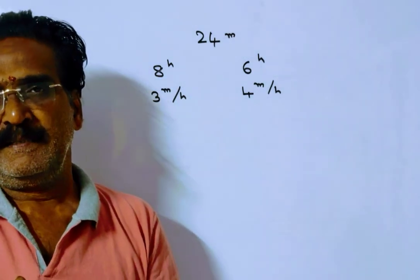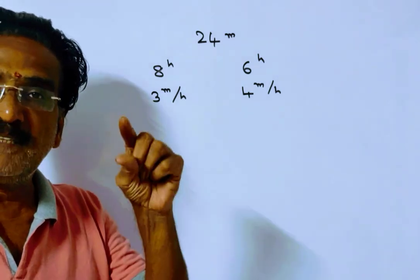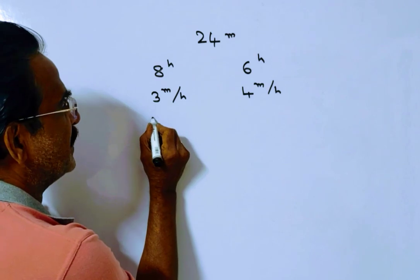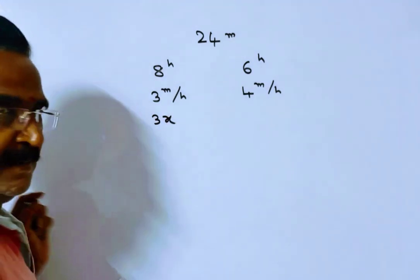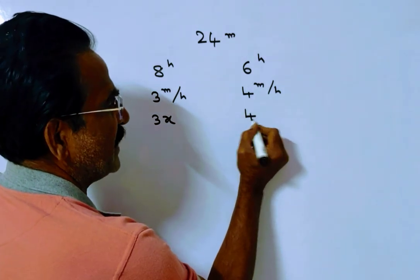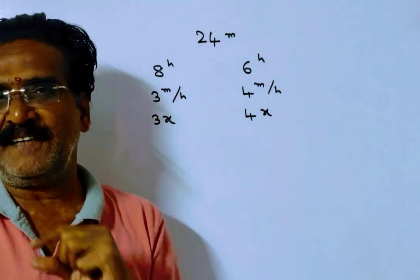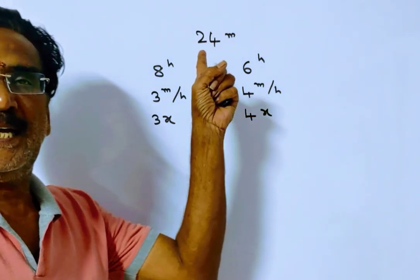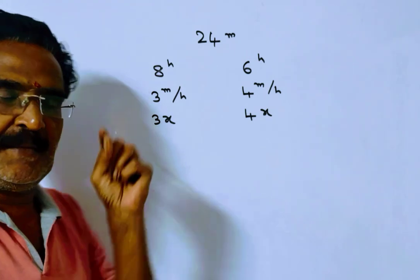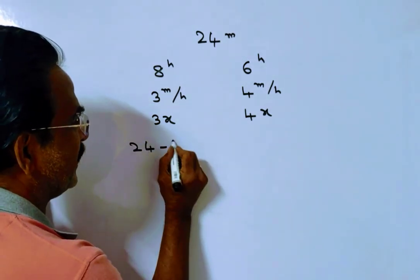In X hours, the first candle is consumed 3x meters, and the second candle is consumed 4x meters. The remaining height of the first candle is 24 minus 3x, since the total height is 24 meters and 3x is consumed.